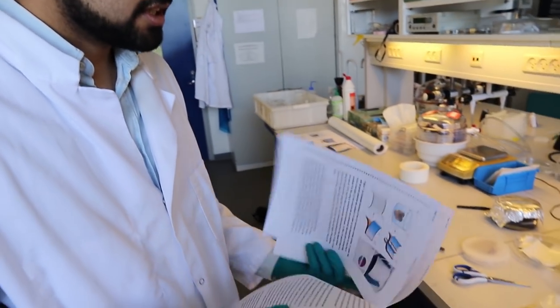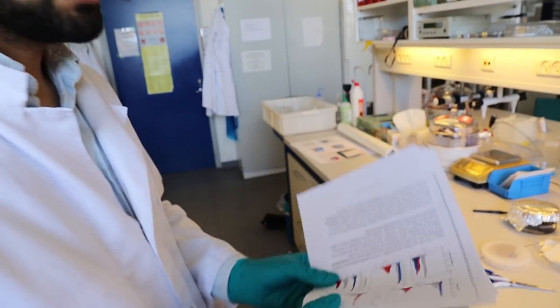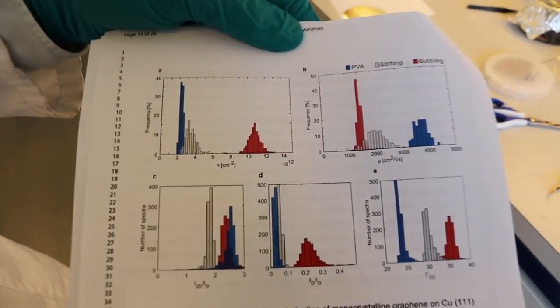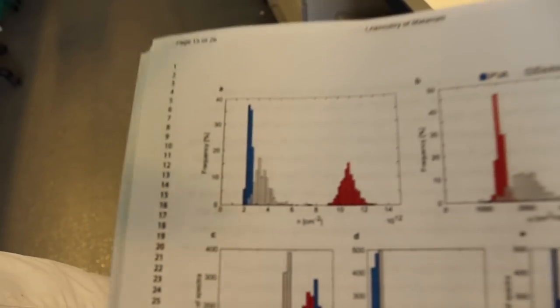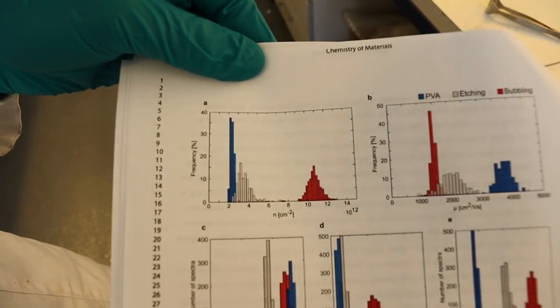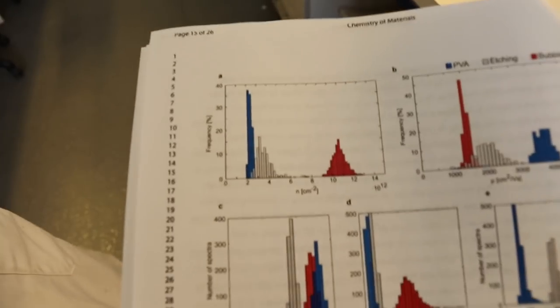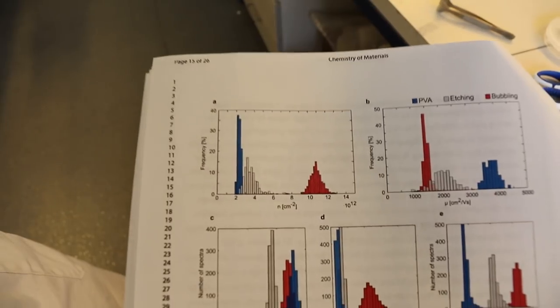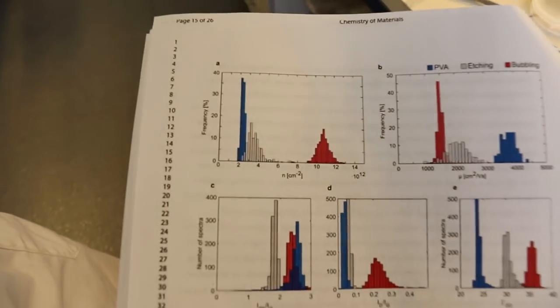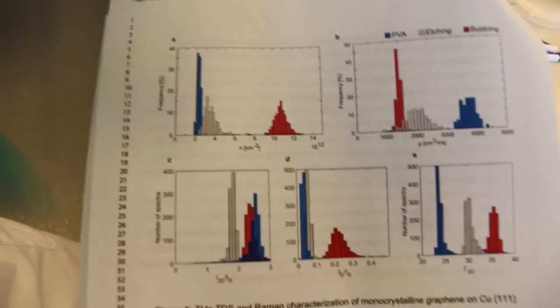So as you can see, this method is very simple and we did this process in roughly 10 minutes. And even though this is a very simple process, we can see from our results that we get actually quite decent transfers. In our paper we show that when we compare this transfer method to bubbling and etching transfers, when we use the same quality of graphene, the transfer properties as well as the Raman properties are better.